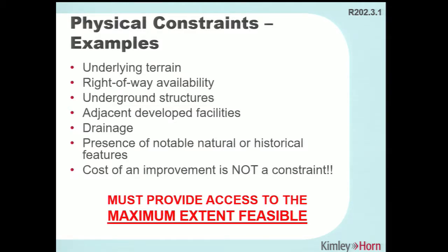ProAG specifically lists examples of physical constraints in the public right-of-way: underlying terrain with slopes that can't be graded flat, right-of-way availability, underground utility structures, adjacent developments, buildings at the corner right against the right-of-way, drainage, and historical or natural features. Just because something is old doesn't make it historic — it has to be on the historic registry, and you must understand the significance of why it is.